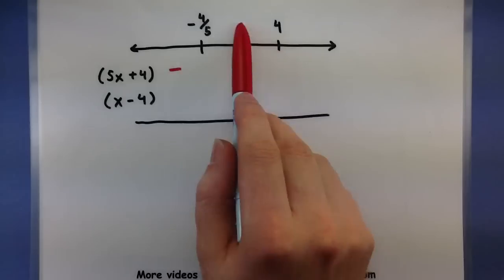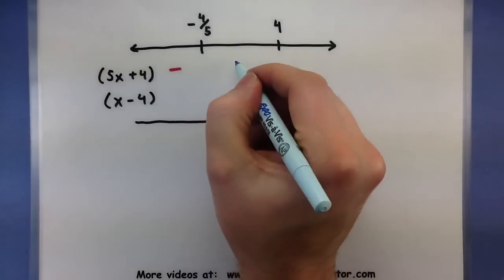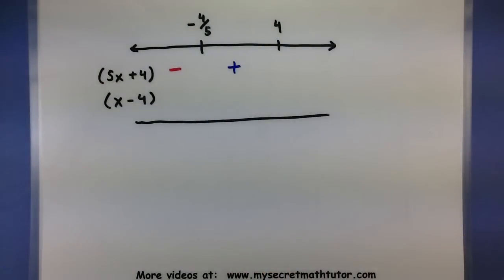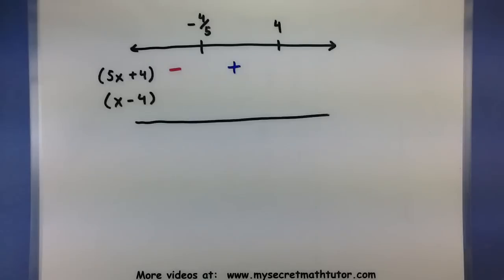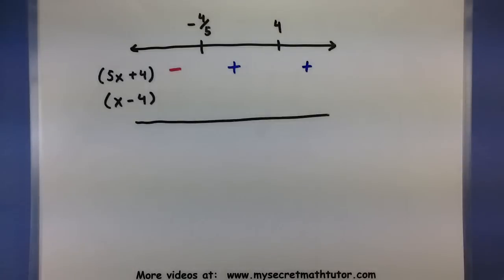Now let's choose something in the middle interval. Zero is in there, so I'll take zero and plug it in: 5 times 0 is 0, plus 4 — that's a positive number. And one more test value from the last interval — how about 5? Plug it in: 25 plus 4 gives positive 29. So now I know what that first factor's value is for each of these ranges.